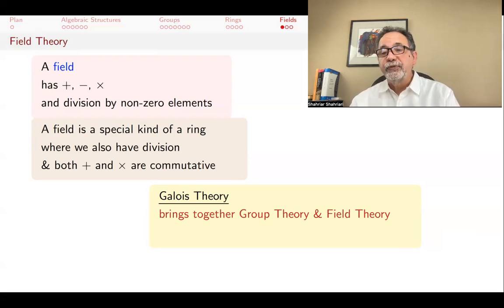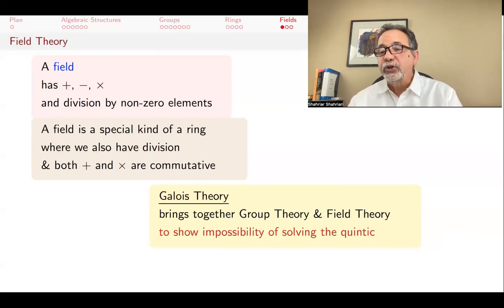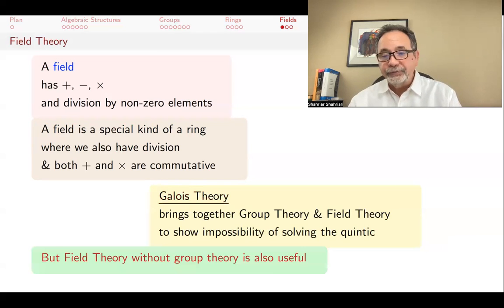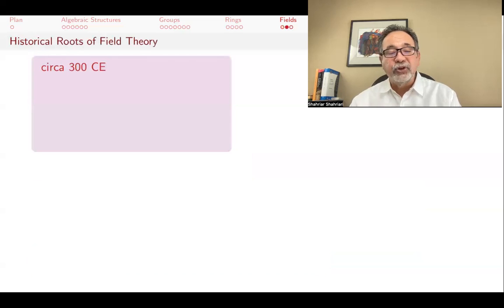Galois theory is where the study of fields and groups are brought together to, among other things, prove the unsolvability of the quintic. But the study of fields, even without groups, has dividends. The abstract theory of fields allows us to answer some very old problems that plagued humanity for about 2,000 years.